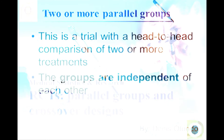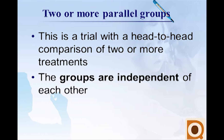Talking about parallel groups, we might have two parallel groups or even more groups. This is basically a trial with a head-to-head comparison of two or more treatments. In this study design, subjects are allocated at random to a single treatment or a single treatment program for the duration of the trial. Usually the aim is to allocate equal numbers to each trial, although unequal allocation at times is very possible.